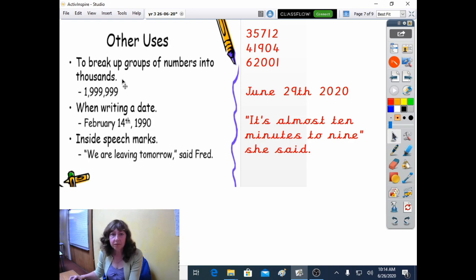Other uses. Well, in year three, we usually only look at numbers up to four digits, but we can read five-digit numbers probably much more than that now. Sometimes we use commas to break up groups of numbers into thousands. So I expect lots of you can read this number, but if you're not sure, 1,999,999.